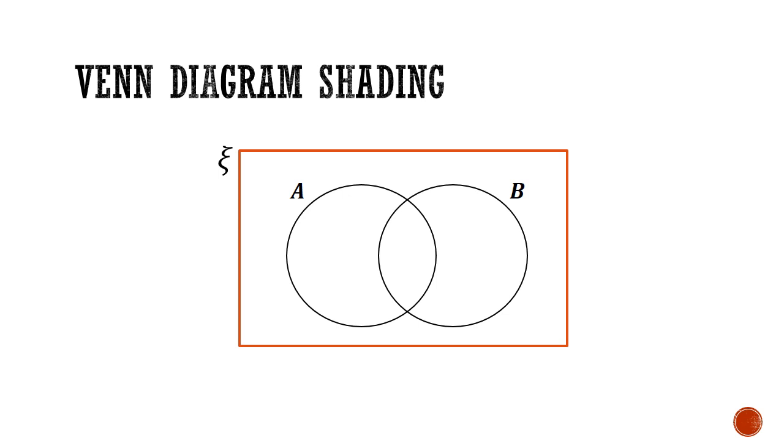If the problem is to shade A union B, you shade everything inside A, together with everything inside B. If you're asked to shade A intersect B, that intersection is the common region between circle A and circle B, so you just shade the middle part as shown.